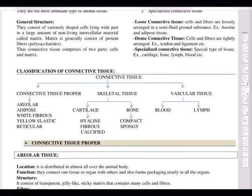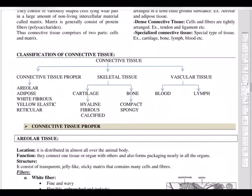Connective tissue is classified into three types: connective tissue proper, skeletal tissue, and vascular tissue. Under connective tissue proper we have areolar, adipose, white fibrous, yellow elastic, and reticular tissue. Under skeletal tissue we have cartilage — including hyaline, fibrous, and calcified cartilage — and bone, including compact and spongy bone. Under vascular tissue we have blood and lymph.